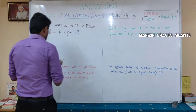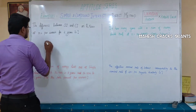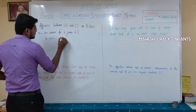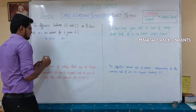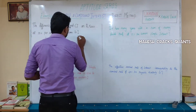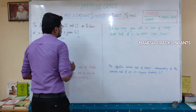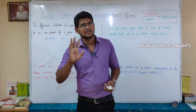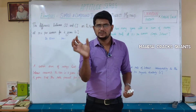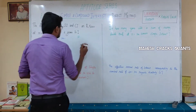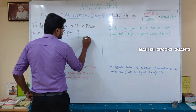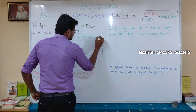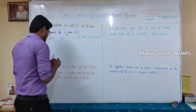We start with Rs. 5000, which we treat as 100%. For Simple Interest over 2 years at 10% per annum, 2 years means 2 times 10%, so Simple Interest is 20%, which is nothing but n into r — number of years into rate of interest equals 20%.